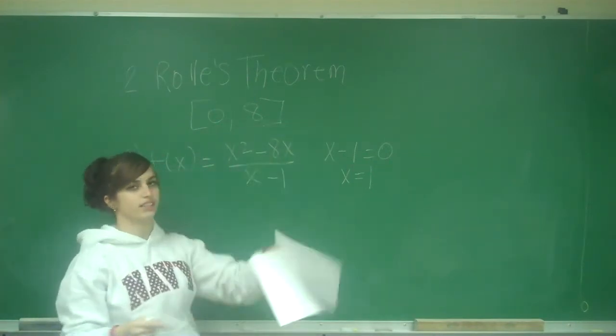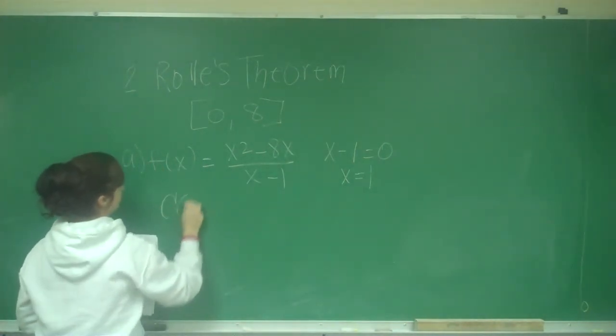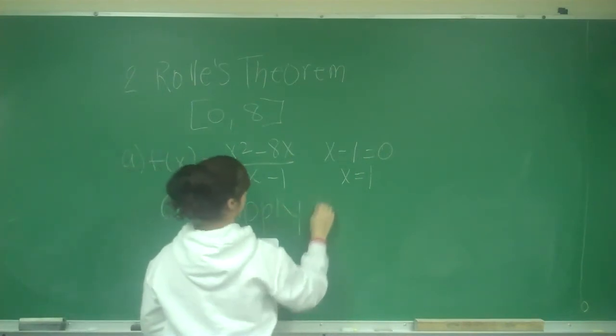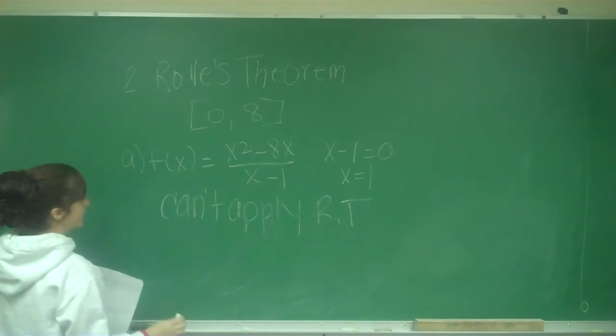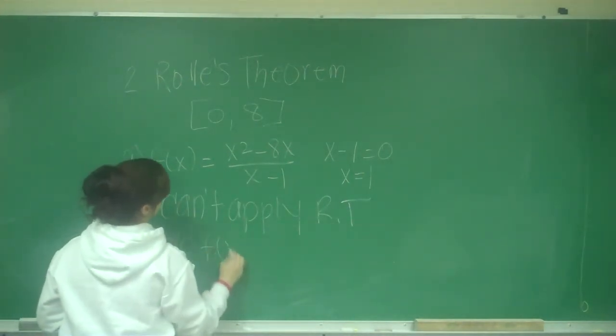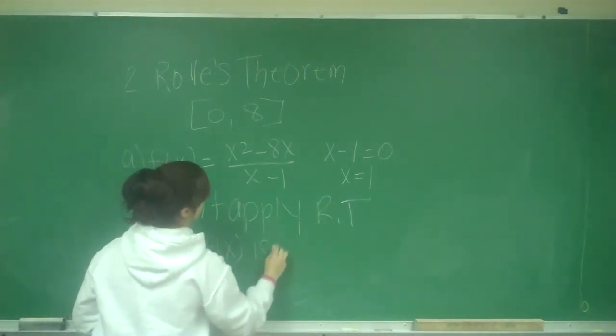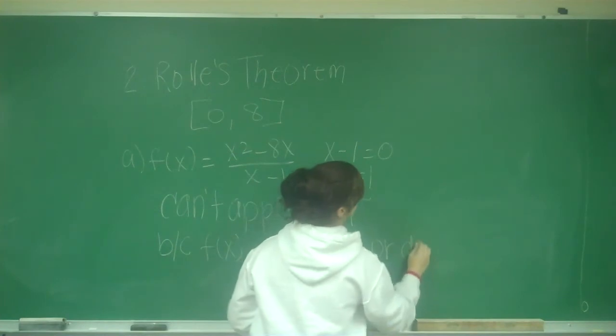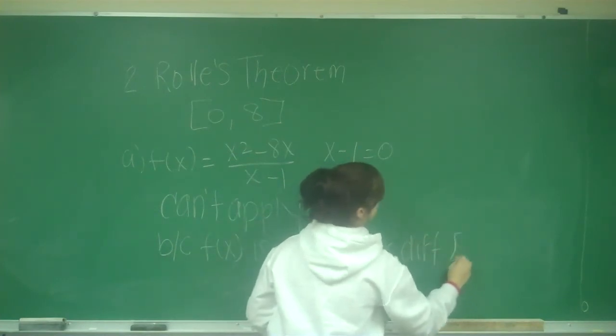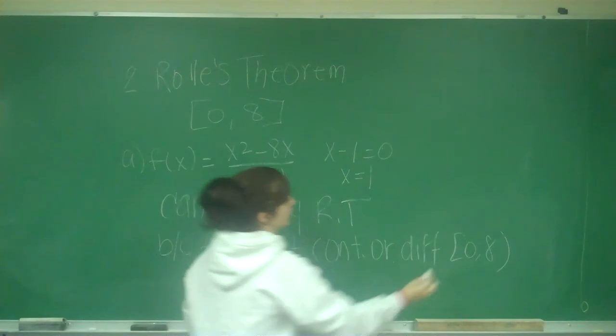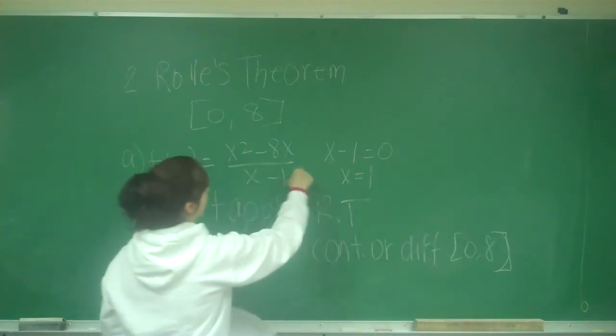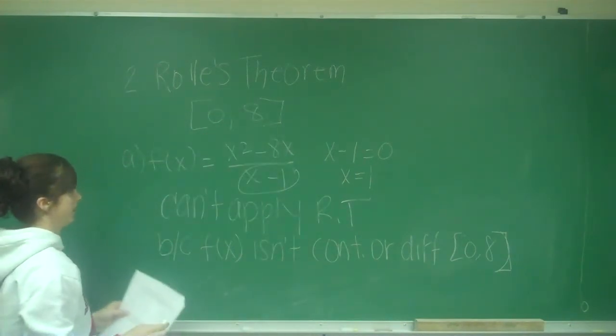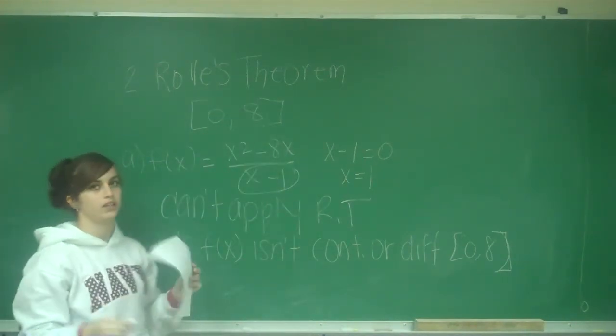And 1 is in our interval from 0 to 8, so it's not continuous from 0 to 8. So we cannot apply Rolle's theorem, and that is because f(x) is not continuous or differentiable on 0 to 8, because it has a discontinuity at 1. So for part A, we cannot apply Rolle's theorem.